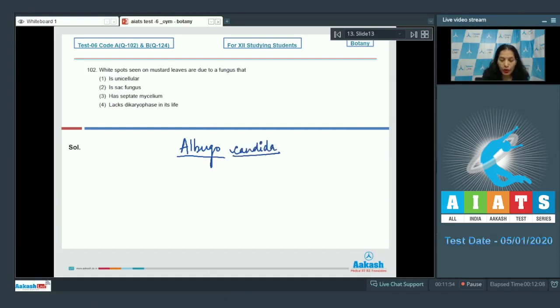Is it unicellular? No, it is multicellular. Is it a sac fungus? No, it belongs to the class phycomycetes. Does it have septate mycelium? No, it has aseptate mycelium. Does it lack dikaryophase in its life cycle? Yes, it lacks dikaryophase because dikaryophase is seen only in the members of ascomycetes as well as basidiomycetes.